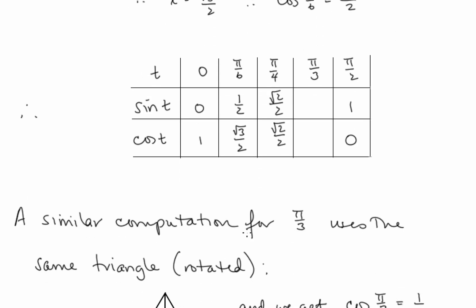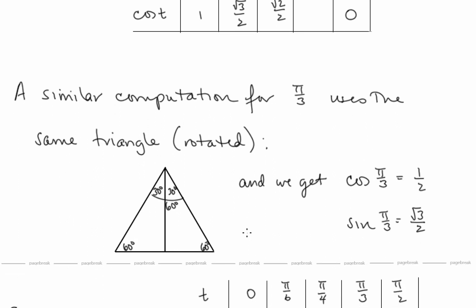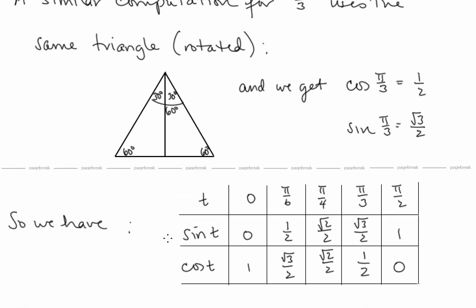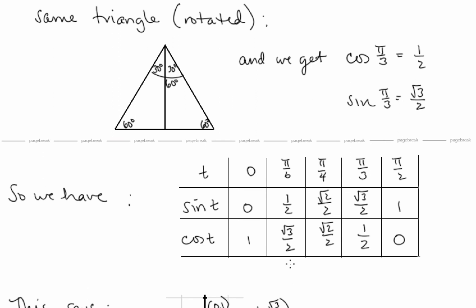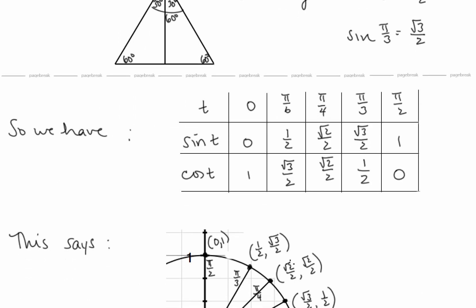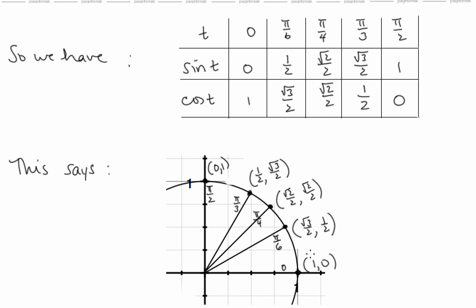A very similar calculation gives us the values for π/3. We use the same equilateral triangle, but upright instead of on its side, so the calculations are the same. Now we have cosine of π/3 equal to 1/2, and sine of π/3 equal to radical 3 over 2. We now have all of the trig evaluations we wanted. In the first quadrant, these give us the x and y coordinates for all the important points along the unit circle.